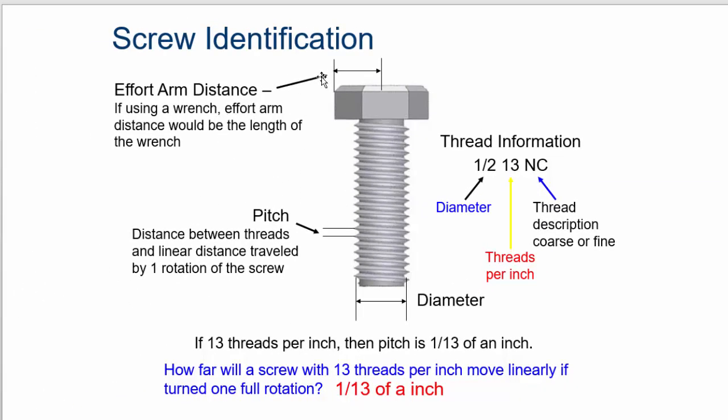To get the effort arm distance, it's the radius of the screw. And the pitch is the distance between the threads. And it's also the linear distance traveled by one rotation of the screw.